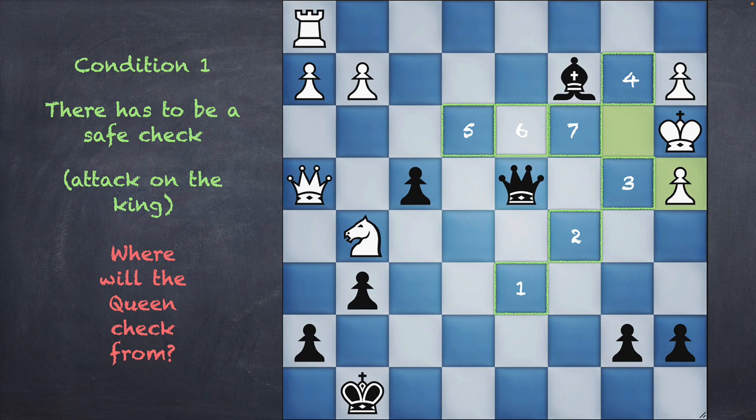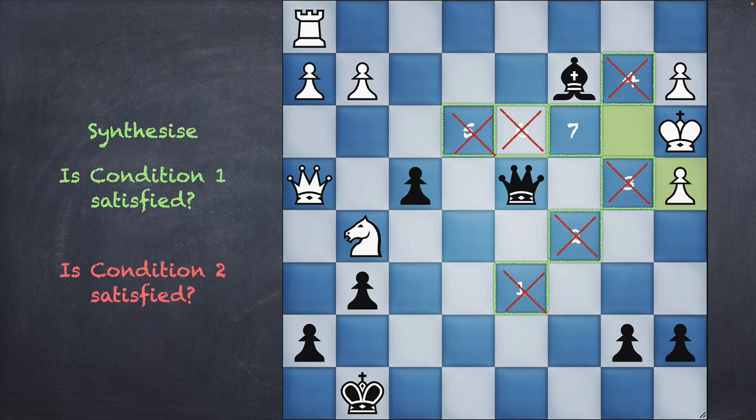So we've taken the problem and broken it down into three parts. First: who is going to give a check — the queen. Second: where would the king escape to — squares three and four. Third: how many possible checks exist — seven in total. Now each one of them can be evaluated: am I satisfying condition one, am I satisfying condition two?